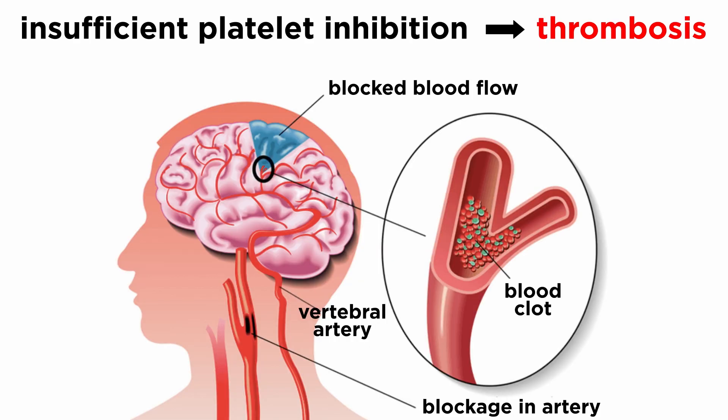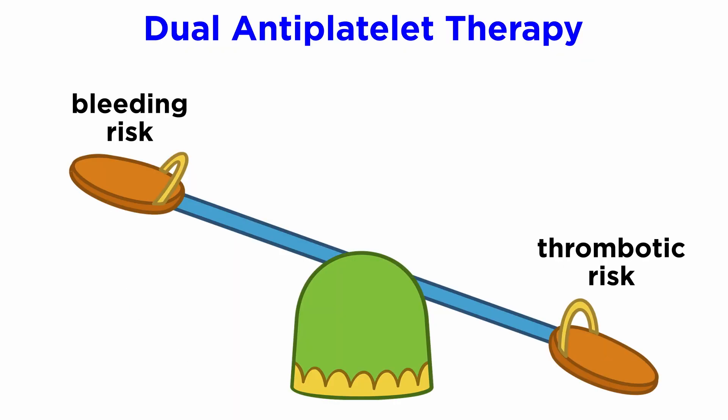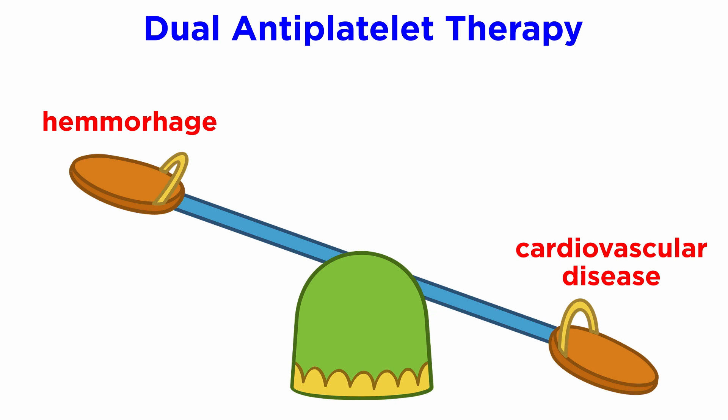But on the other hand, insufficient platelet inhibition can lead to thrombosis and subsequent heart disease and stroke for those who are at risk for these events. Therefore, it is very important to strike a balance between the two extremes, and pushing too far in one direction can indeed be fatal by virtue of either hemorrhage or cardiovascular disease.